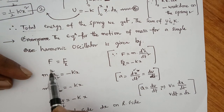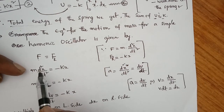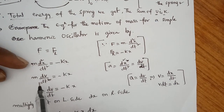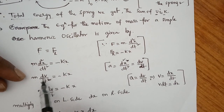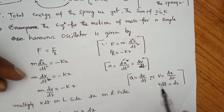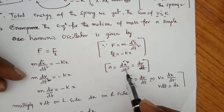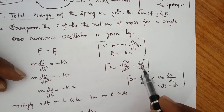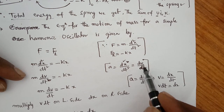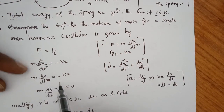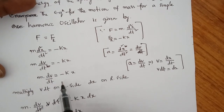F equals ma, and a is nothing but d²x by dt². So m into d²x/dt² equals F, which is minus k into x. And d²x/dt² is equal to dv/dt — the change of velocity per unit time is known as acceleration. So m dv/dt equals minus kx.